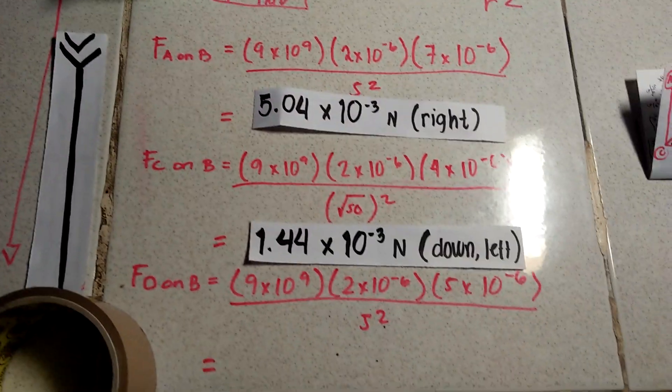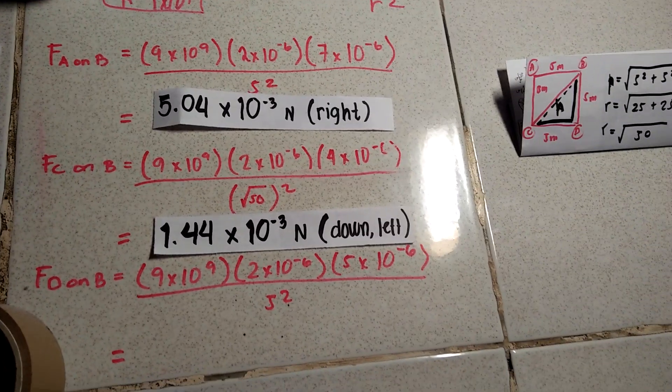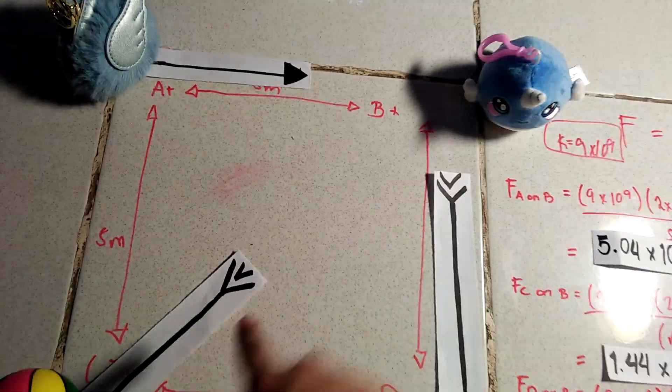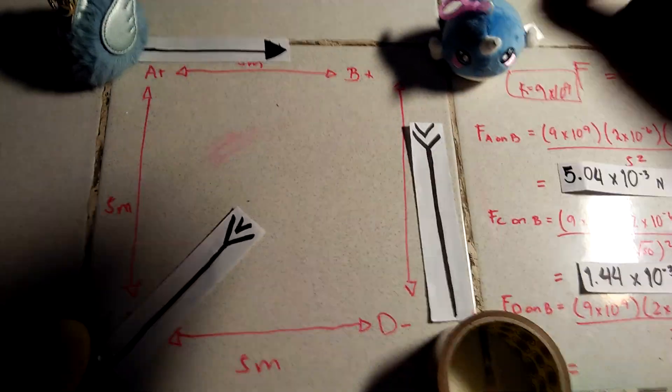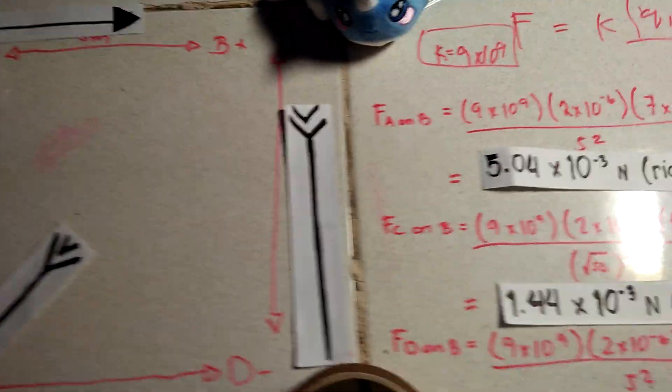And the answer to that is 1.44 times 10 to the power of negative 3, downwards left. Why? Because it's an attraction force. That means the force being exerted is going down and left.